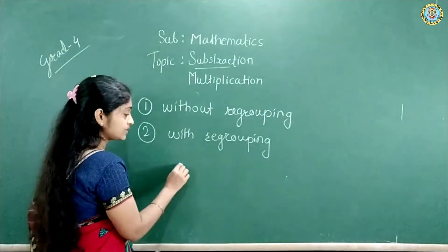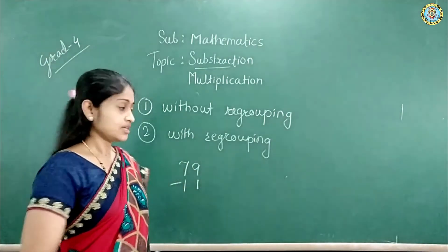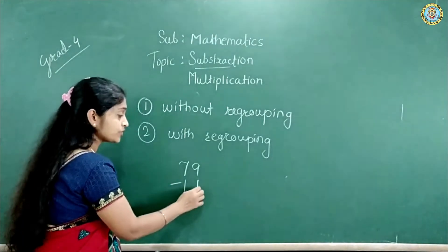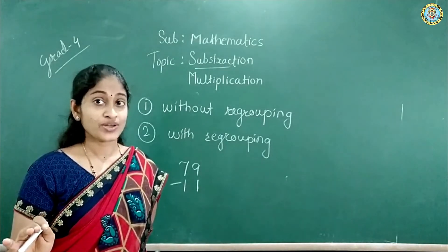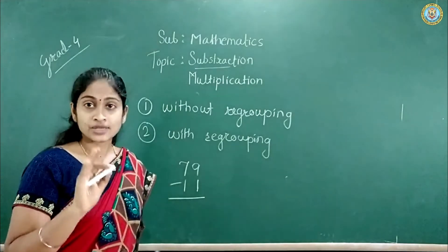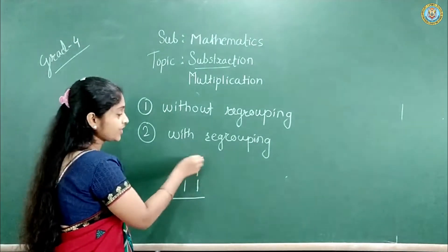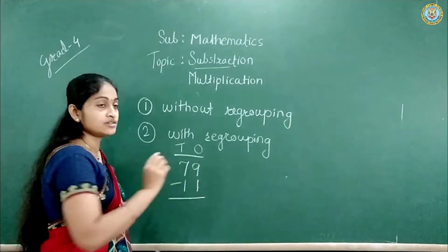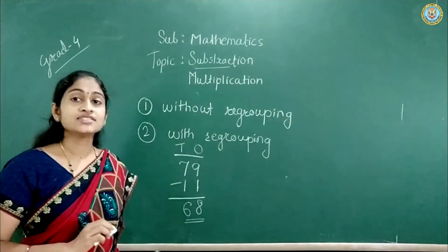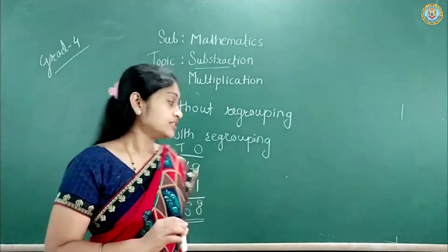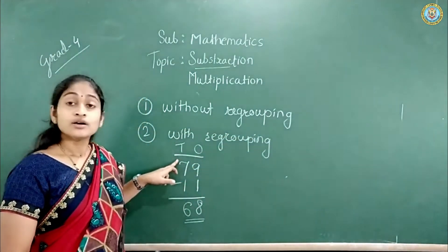See here, I am going to write a number: 79. I am going to subtract 11 from this 79. See, I have 79 flowers for example, and I am going to take 11 flowers from them. How many flowers will remain with me? For that we have to do subtraction. The greater number is always above the smaller number. 1's place, 10's place. See: 9 minus 1 is 8. 7 minus 1 is 6. So 68 flowers will remain with me. This is the process without regrouping — we didn't do any regrouping here.